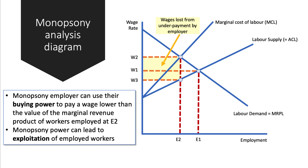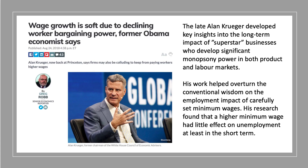In this scenario, the monopsony employer can use their buying power over the limited bargaining power of workers to pay a wage that's lower than the value of the marginal revenue product — in that sense the monopsony can exploit workers. Alan Krueger was brilliant on this. Krueger, one of the great labour market economists, sadly passed away in spring 2019, understood how labour markets affect millions of working people. His research famously found that a higher minimum wage, if set at the right level, can have virtually no effect on unemployment, at least in the short term.